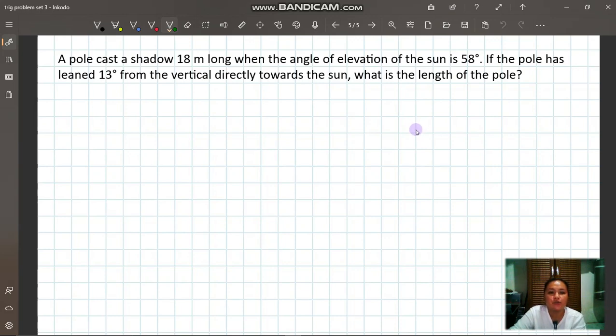Okay. So we have here a pole and the angle of elevation of the sun is 58 degrees. If the pole has leaned 13 degrees from the vertical, the pole is not directly vertical. It leaned 13 degrees directly towards the sun. What is the length of the pole?